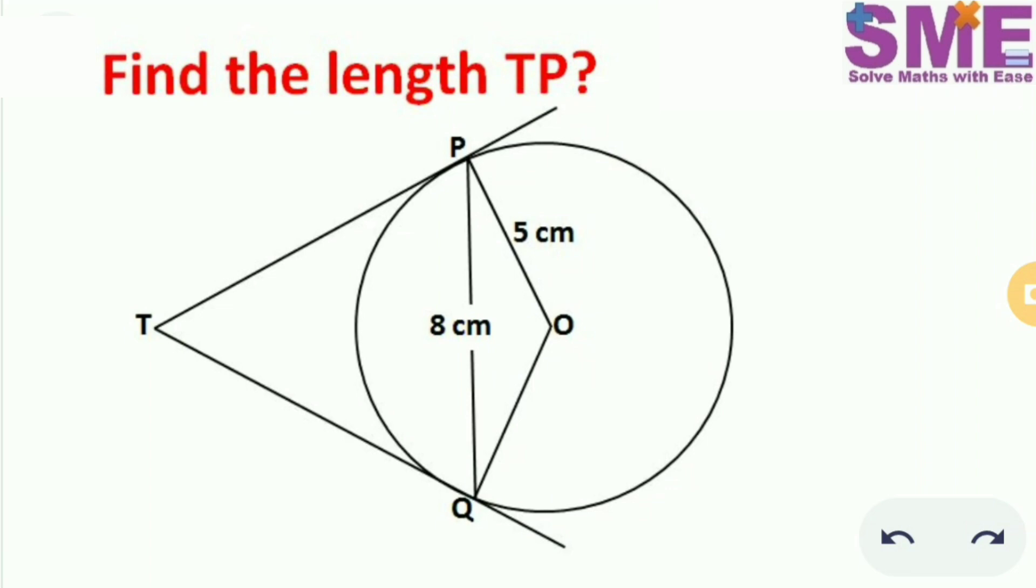In this question we have a circle and the tangents TP and TQ touch the circle at points P and Q, and these two tangents intersect at point T. The radius of the circle is given as 5 cm and the length of the chord PQ is 8 cm.